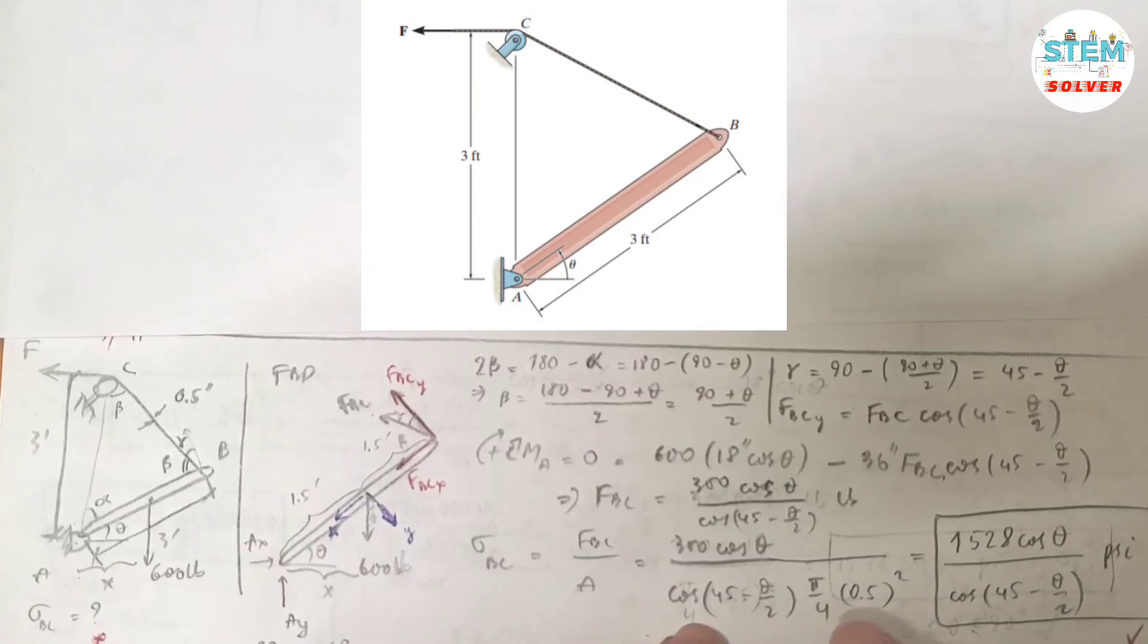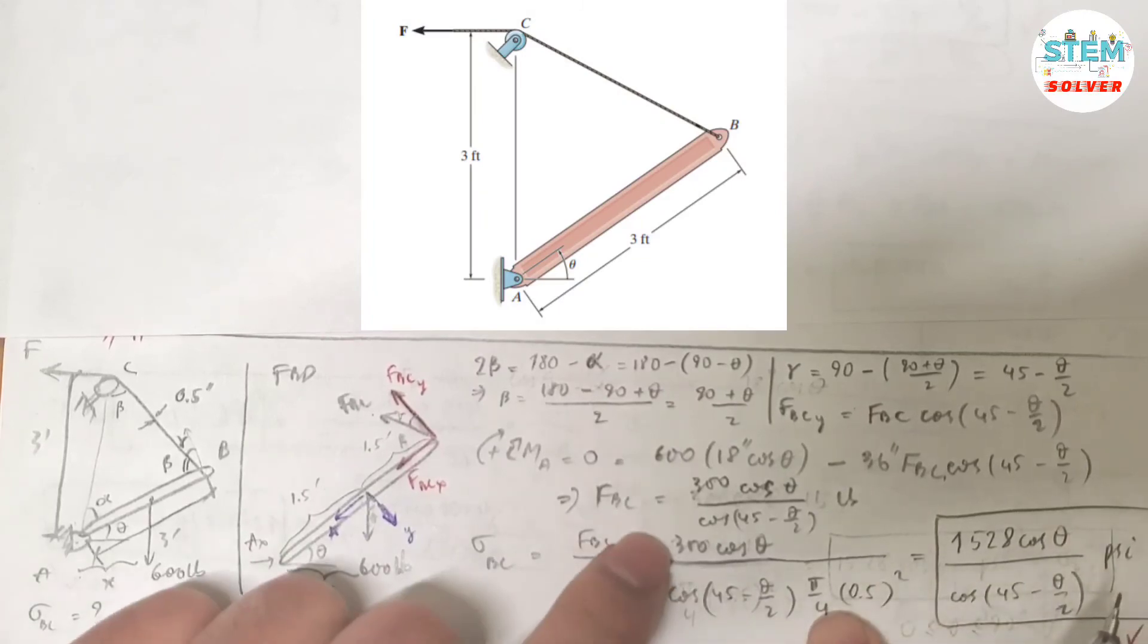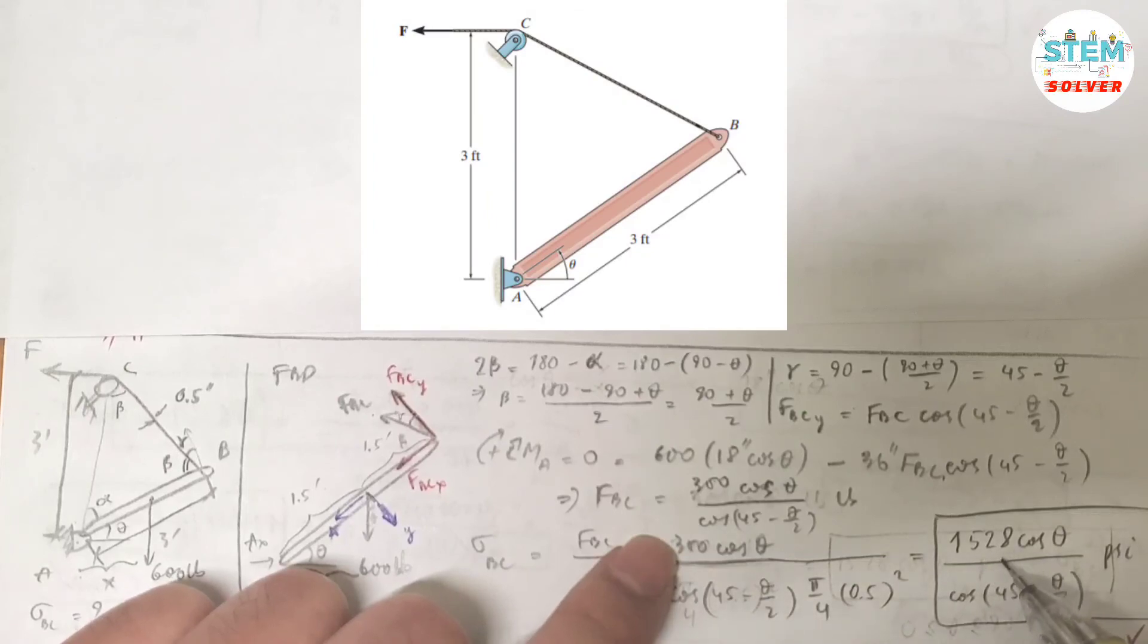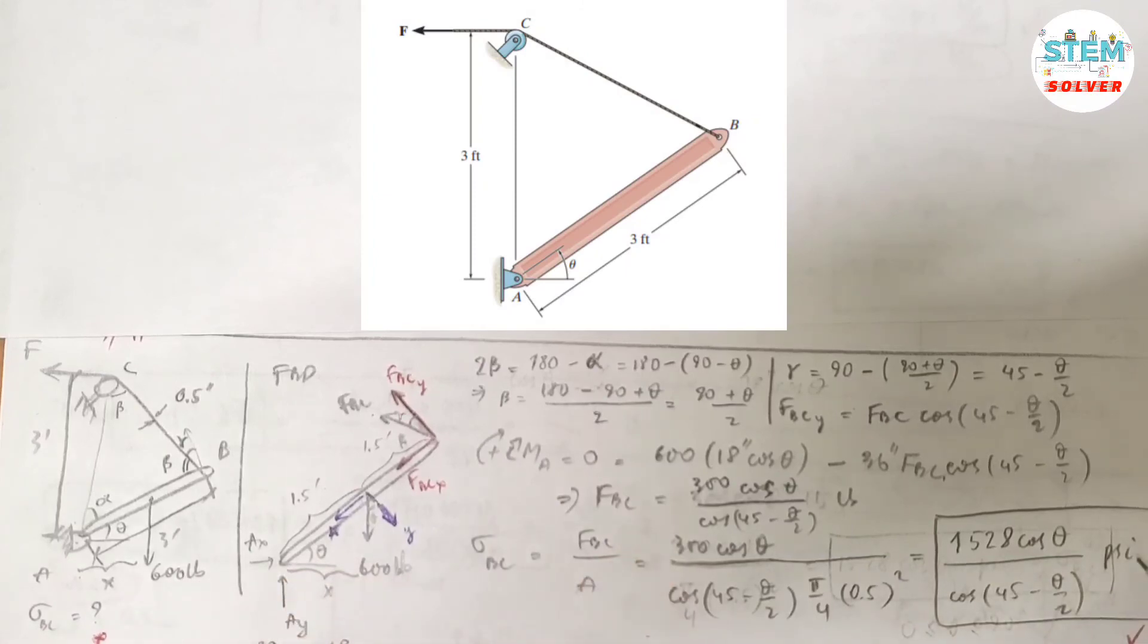Multiply this out and simplify with this. You have 1528 cosine theta divided by cosine of 45 minus theta over 2. And the unit for it is psi. So that is the normal stress in cable BC in terms of theta. That's it!